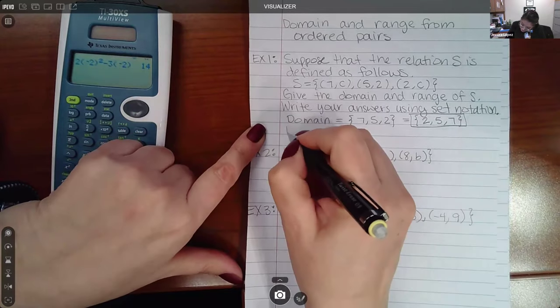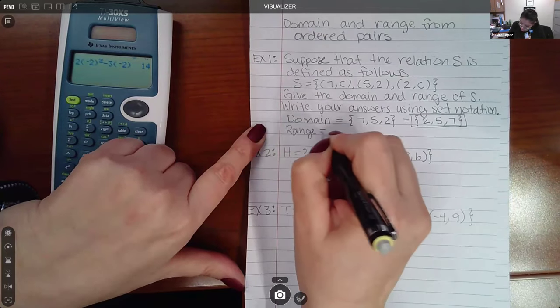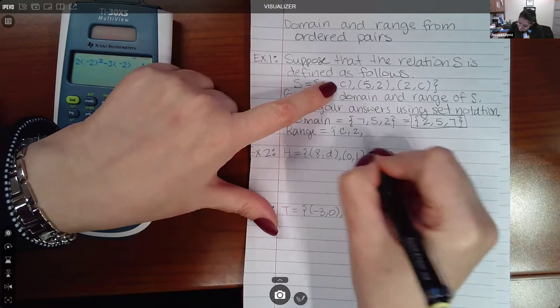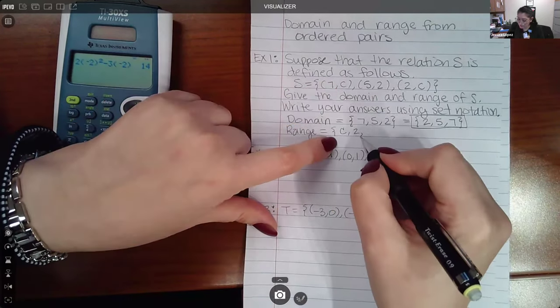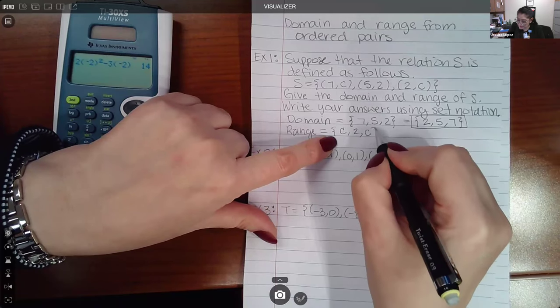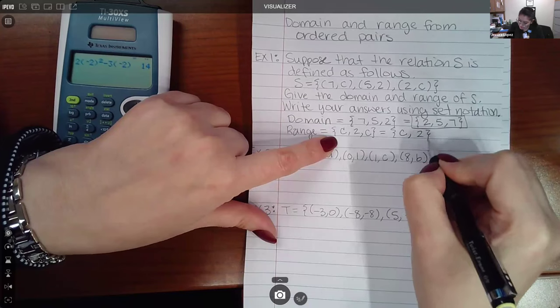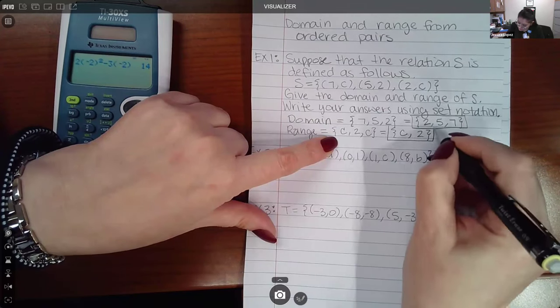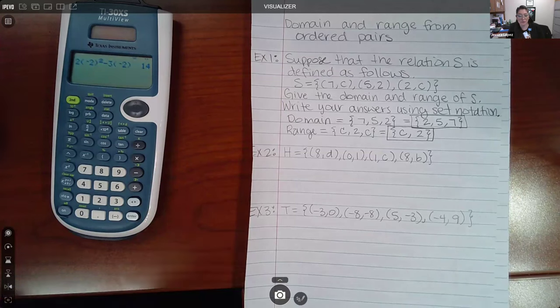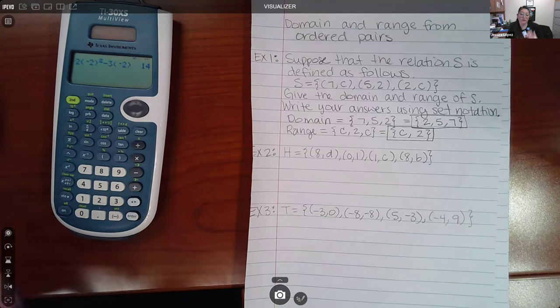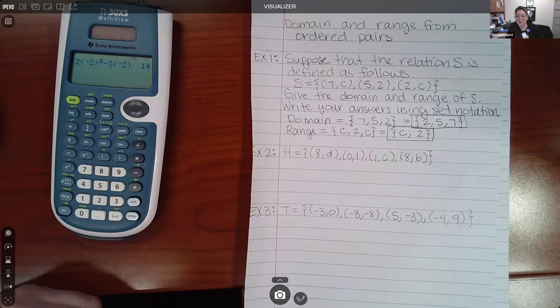If you're doing range, that's always the second component, like our Y values. So it would be C, two, and then C appears again. You do not need to write C twice - it's the same thing as just writing C and two. If you do have some values that double or triple, you only need to list them once because that value is included in the range.